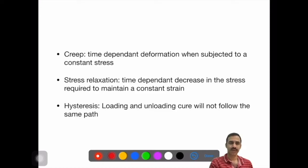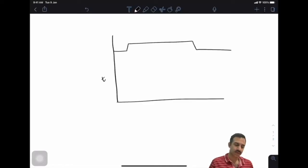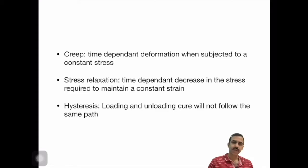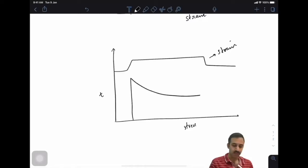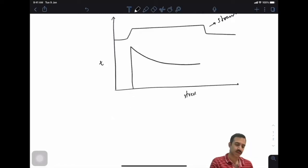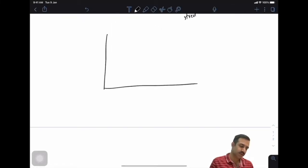Creep is time-dependent deformation when subjected to constant stress. If we plot time against strain with constant stress, there will be time-dependent deformation—this is called creep. Stress relaxation is a time-dependent decrease in the stress required to maintain a constant strain. Hysteresis means the loading and unloading curves do not follow the same path.